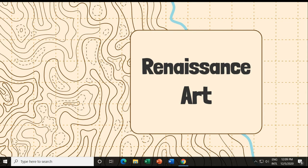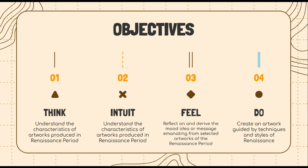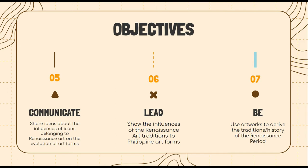For this morning we have our objectives. Number one is to understand the characteristics of artworks produced in the Renaissance period. We also have: reflect on and derive the mood, idea, or message emanating from selected artworks of the Renaissance period; create an artwork guided by techniques and styles of the Renaissance; share ideas about the influences of icons belonging to Renaissance art on the evolution of art forms; show the influences of Renaissance art traditions on Philippine art forms; and use artworks to derive the traditions and history of the Renaissance period. Those are our seven objectives for this topic.